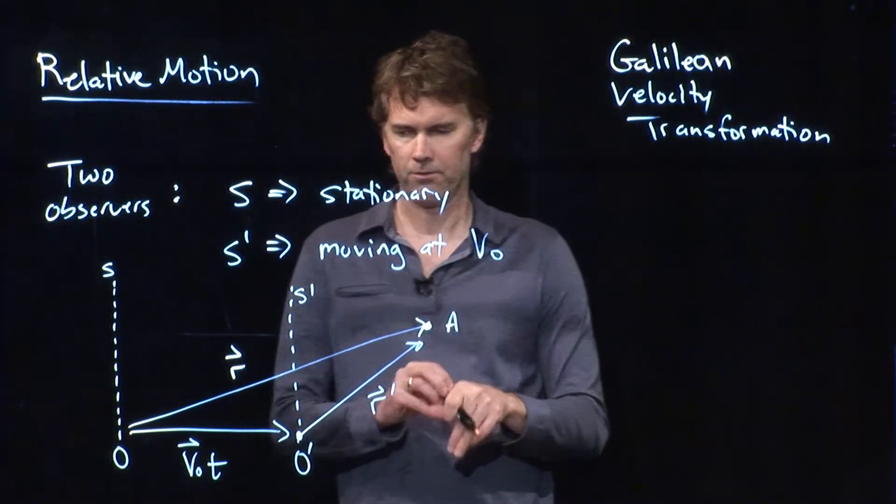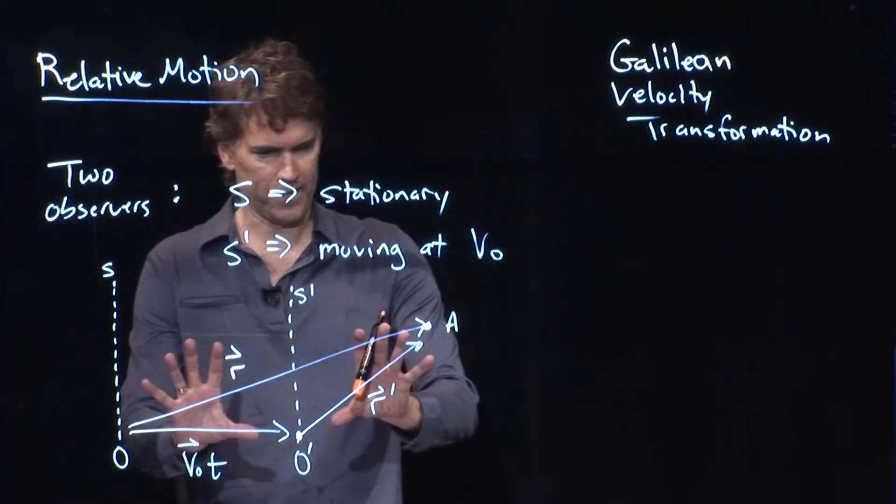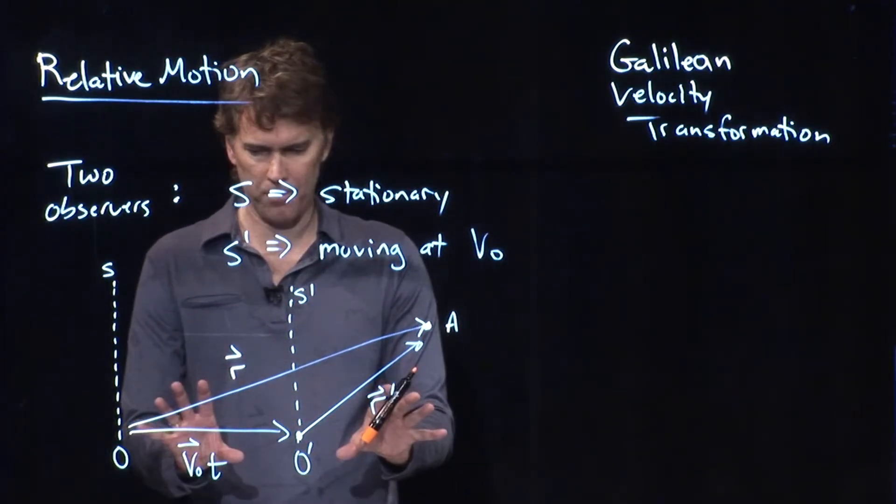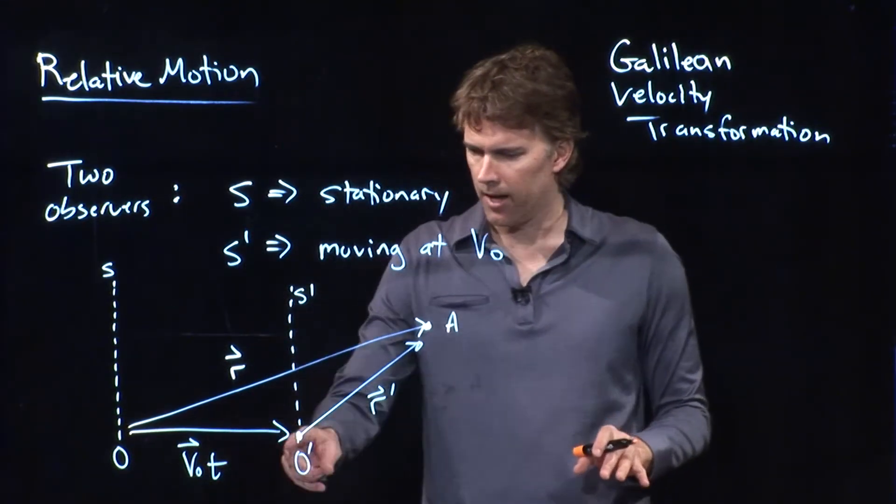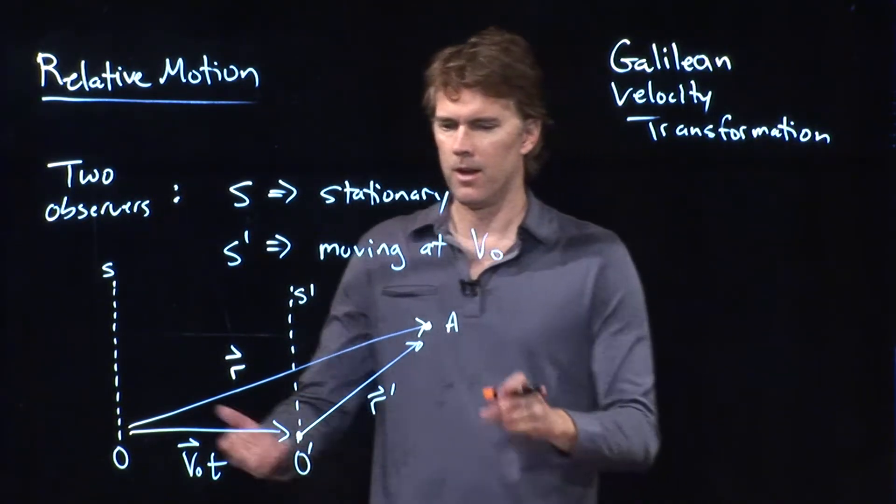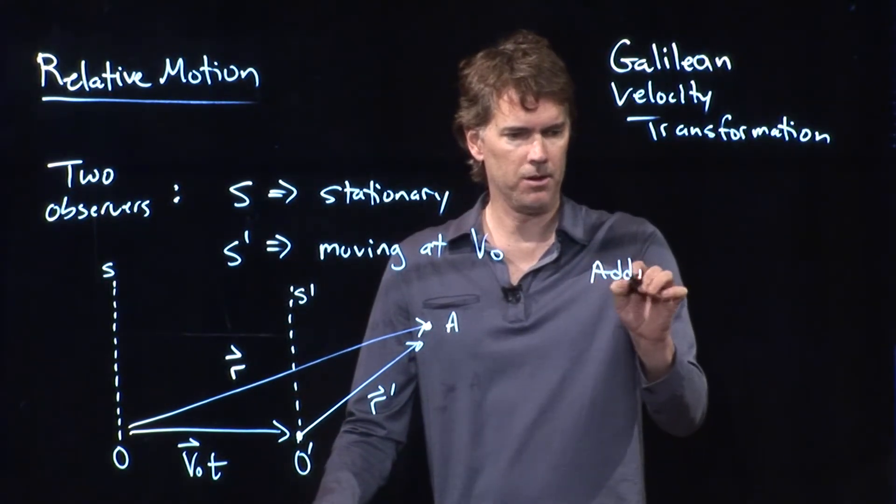All right. So, this maybe looks a little complicated. But we are familiar with vectors. We know how to add up vectors. It looks like if I take this vector, V-naught T, and I add R prime, I'm going to get the sum of the two, which is R. And that's exactly what we do.